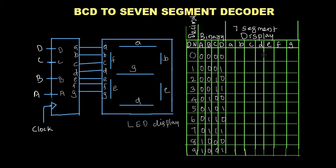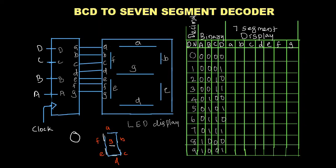Next we write the 7-segment display values corresponding to each decimal value. First, to display digit 0 on the 7-segment display — where segments are labeled A, B, C, D, E, F, and G — if I want to display 0, I have to turn on A, B, C, D, E, and F.